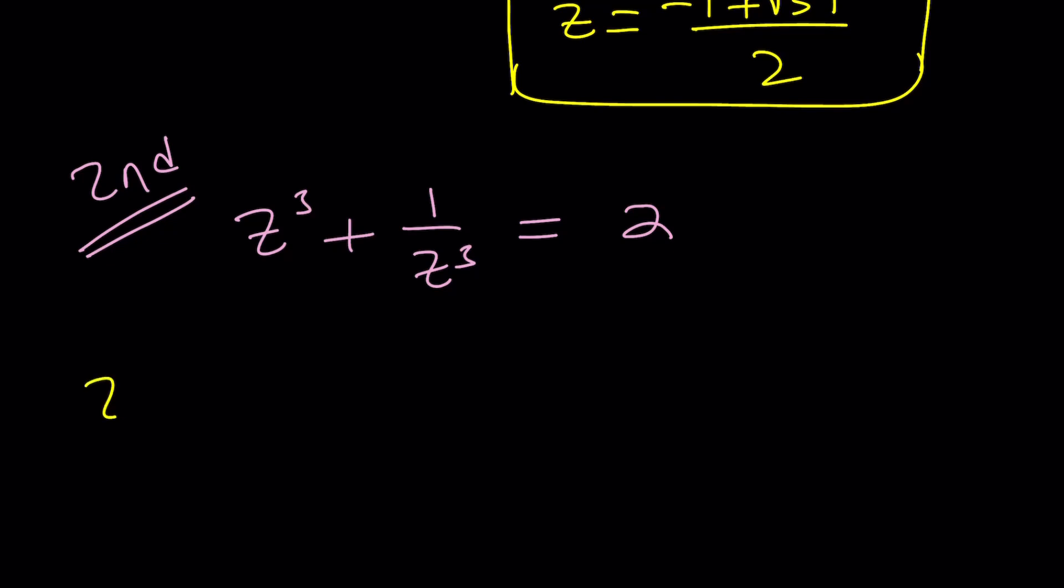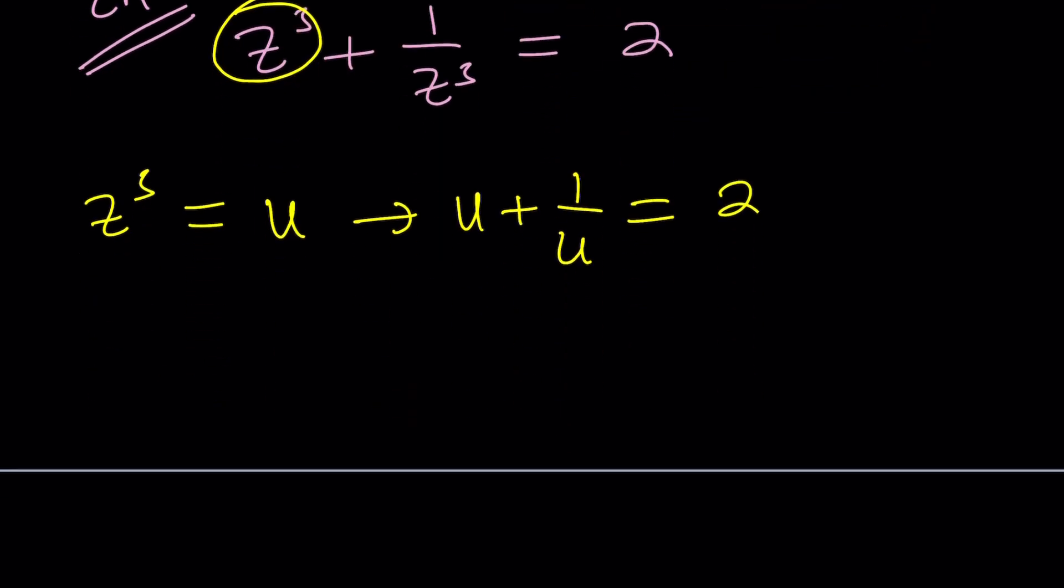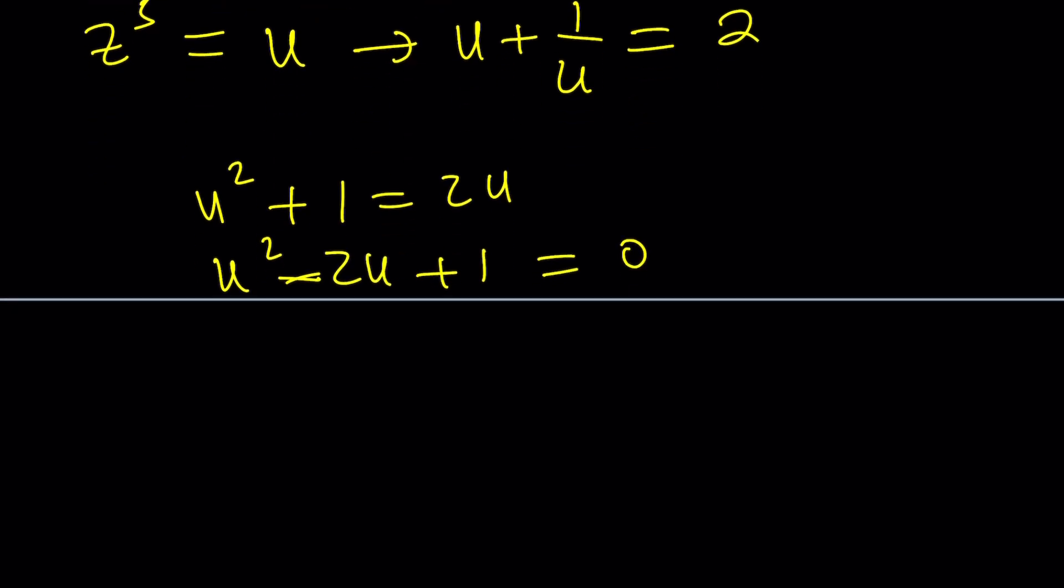So now, we have z cubed. And I want to set it equal to u because why not? That simplifies the problem. u plus 1 over u is equal to 2. And as you know, we're going to get u squared plus 1 equals 2u. And again, if it's your birthday, happy birthday to you. Congratulations.